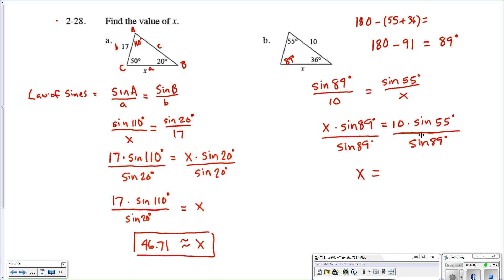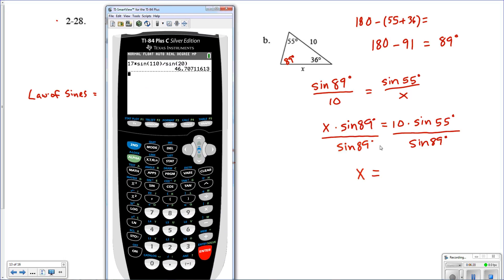And we're going to get x equals. I'm going to go ahead here and compute that on the calculator as well. Let's do 10 times the sine of 55 degrees, and then we're going to divide it by the sine of 89 degrees. And you'll see that we get about 8.19 units is what x would be. So we're going to get about 8.19 units there. And that's rounded, so I guess it's more of an approximation there.